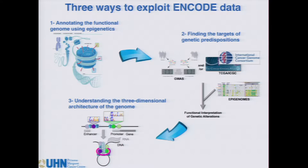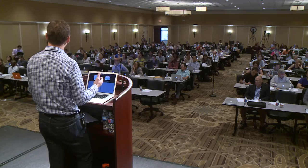The first point has to do with the capacity to functionally annotate the genome of any given cell using epigenetic signals. The second relates to merging epigenomes with information about genetic predispositions or mutations called in cancer, to make sense of the functional biology behind these mutations. And the final point looks at how one can use ENCODE data to better understand the 3D architecture of the genome and predict which regulatory elements influence which genes.